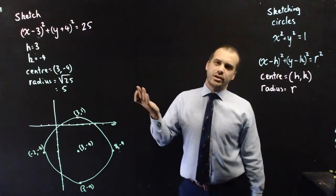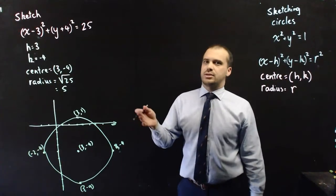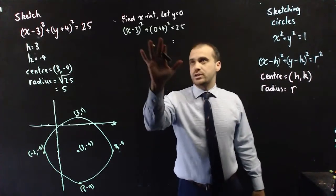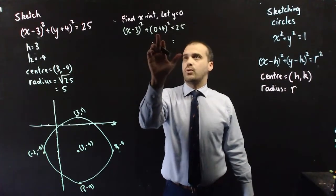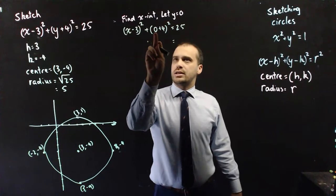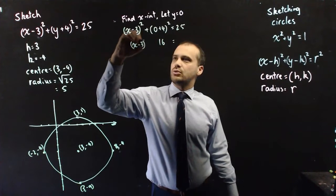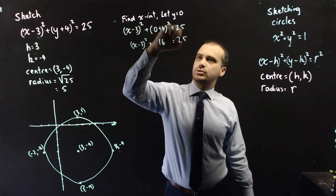So, how do you find them? Same way you find x-intercepts and y-intercepts all the time. You let x equal 0, you let y equal 0. The algebra can get a little tricky. I'm just finding the x-intercept here by letting y equal 0. You can see that that's 0 plus 4 squared, which is 16. I get this x minus 3 squared plus 16 equals 25.